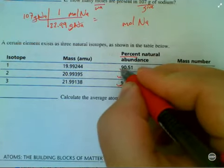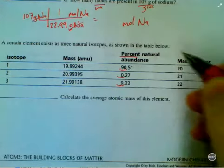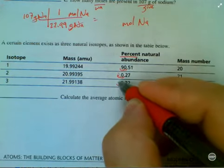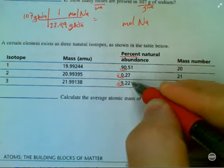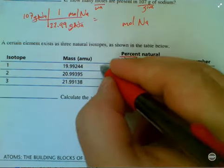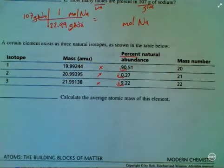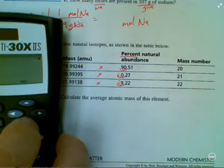So as a decimal, this is 0.9051. As a decimal, this is 0.0027. As a decimal, this is 0.0922. And I'm simply going to multiply each of those terms together. So let's do some crunching here.